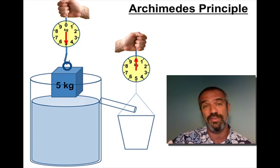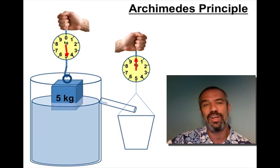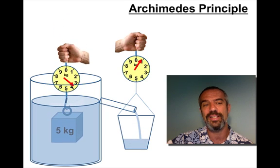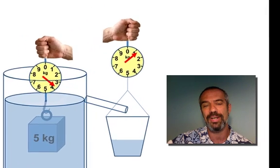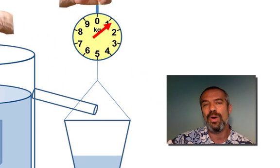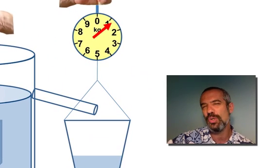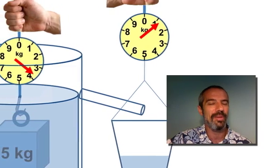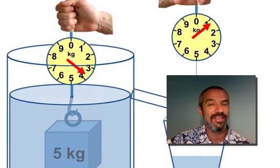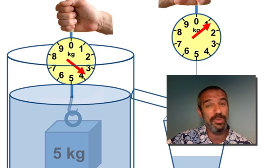This is really the crux of Archimedes Principle right here. Watch carefully. It's losing its weight. Notice what happened — the water that flowed over onto the right-hand bucket there weighed about 1.2 kg. Look at how much weight was apparently lost by the object. It went from 5 down to about 3.8 — about 1.2 kg as well.